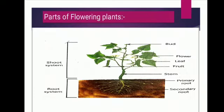Now, parts of flowering plants. We see a number of plants bearing flowers like rose, pansy and marigold — these are flowering plants. Flowering plants are the most important group of plants inhabiting the earth and they carry out different functions. Most flowering plants have two systems: root system and shoot system. The part of the plant which remains below the soil is called the root system, and the part above the soil is called the shoot system.